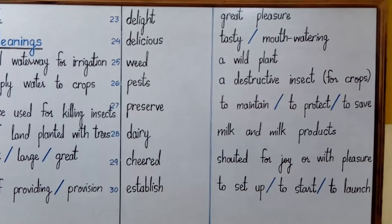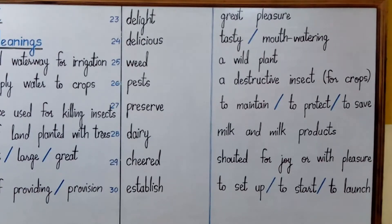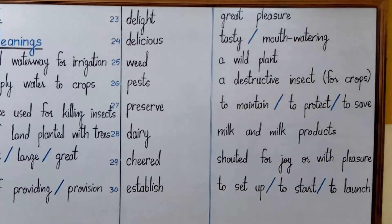Number twenty-five is 'weed'. Weed is actually a wild plant which grows unnecessarily, or in simple words, a wild plant which grows where it is not needed.